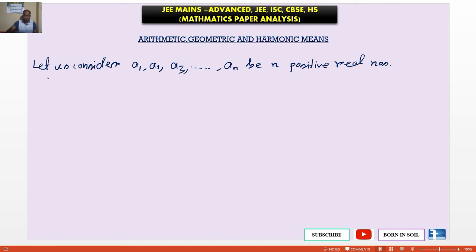Now we define arithmetic mean in short form AM which is equal to sum of the numbers a1 plus a2 plus a3 plus dot dot dot up to an, divided by n, which is called arithmetic mean of the numbers a1, a2, a3, dot dot an.